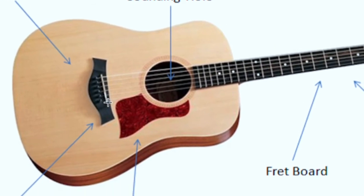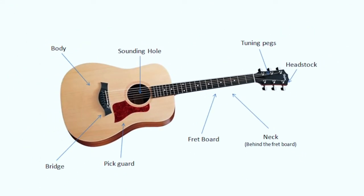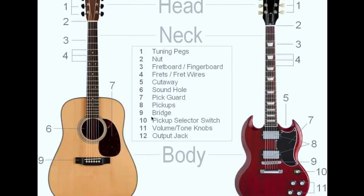This part here is known as the bridge of the guitar. There is a white part that looks like a bone — some people call it the bridge bone, and some people call it the saddle. These were the basic parts of the acoustic guitar.